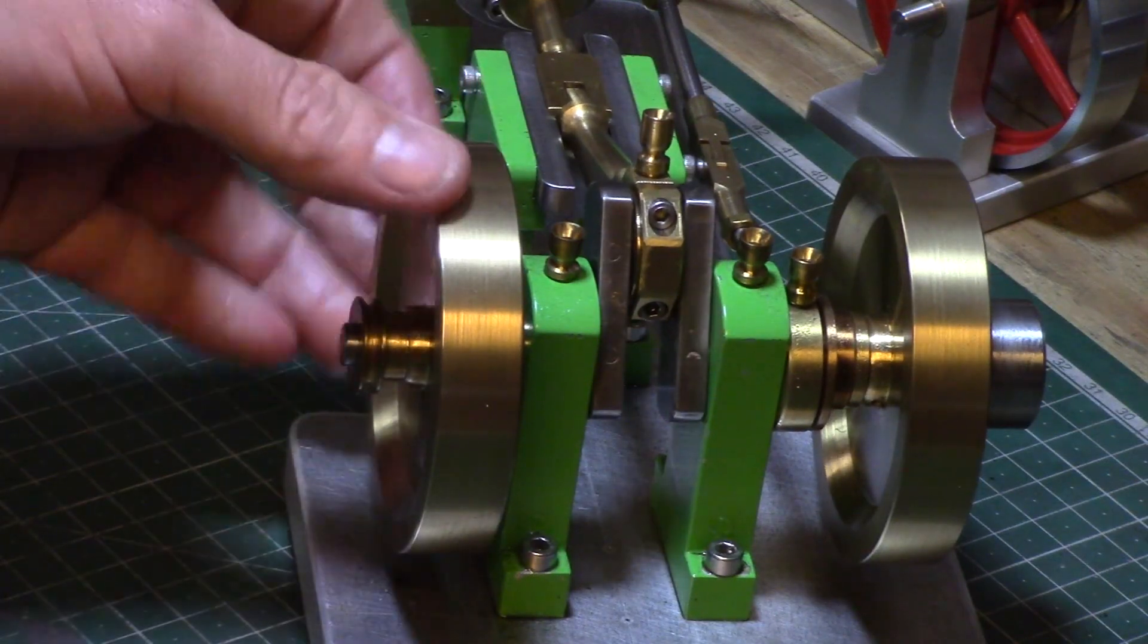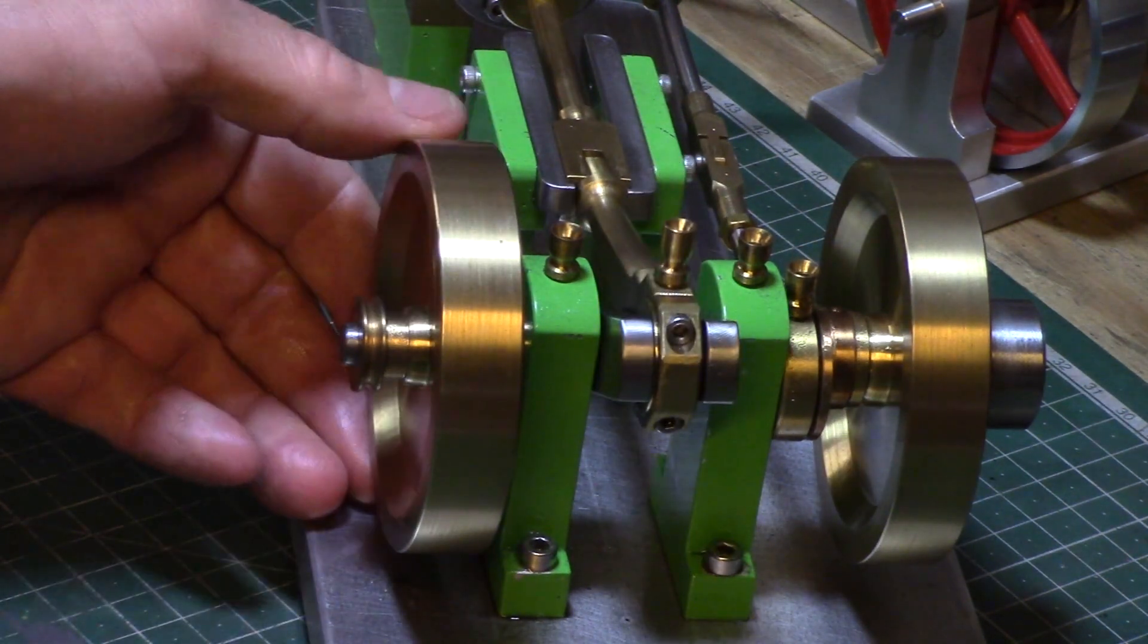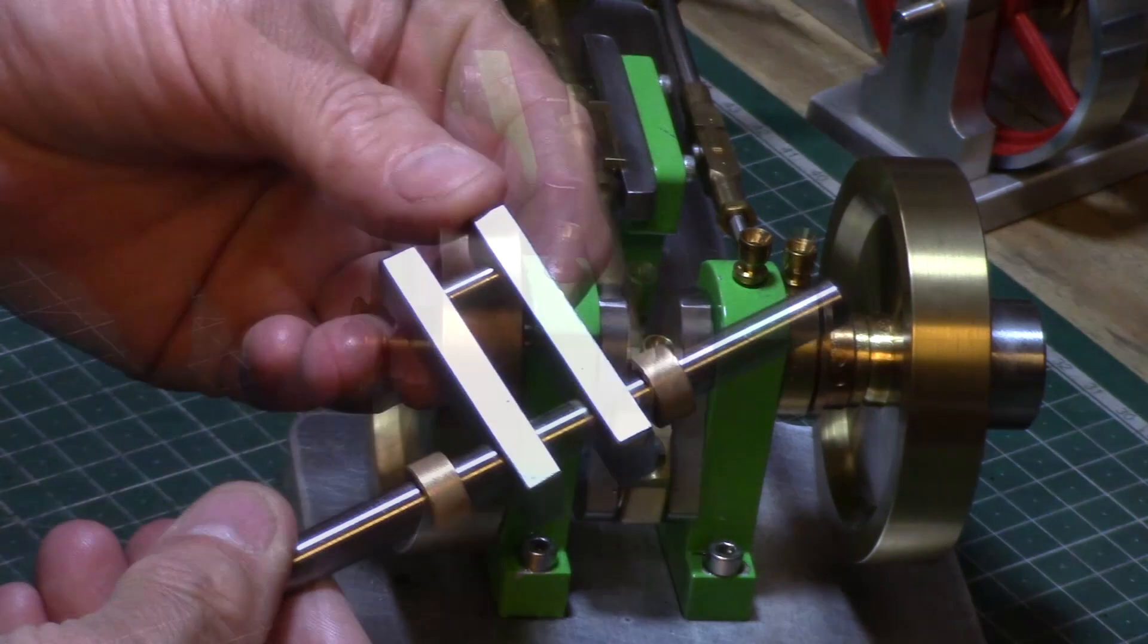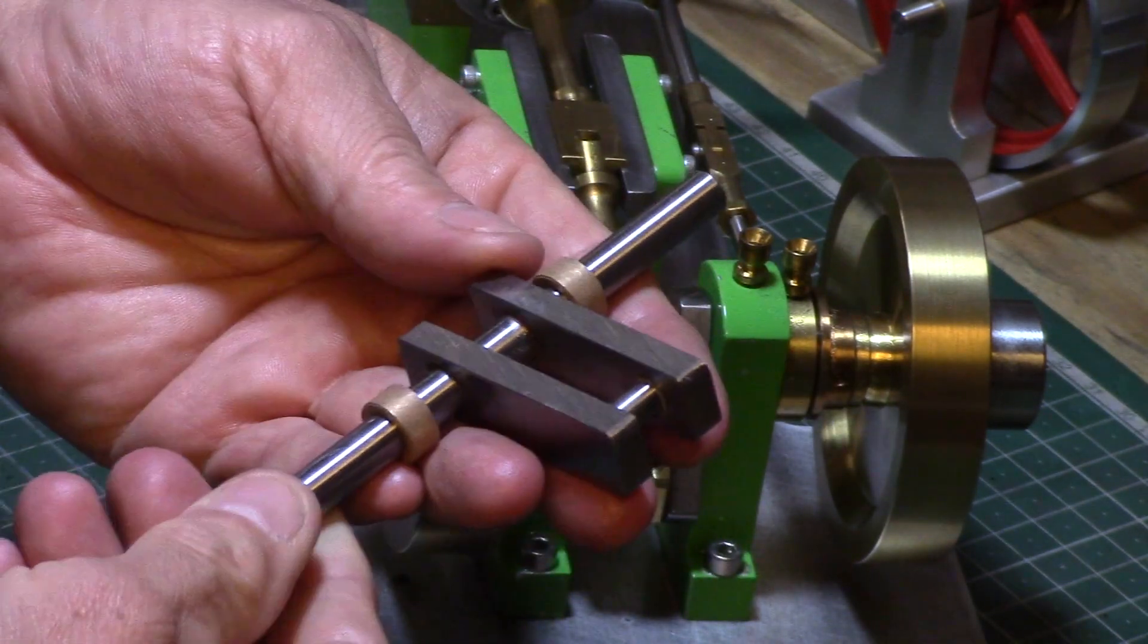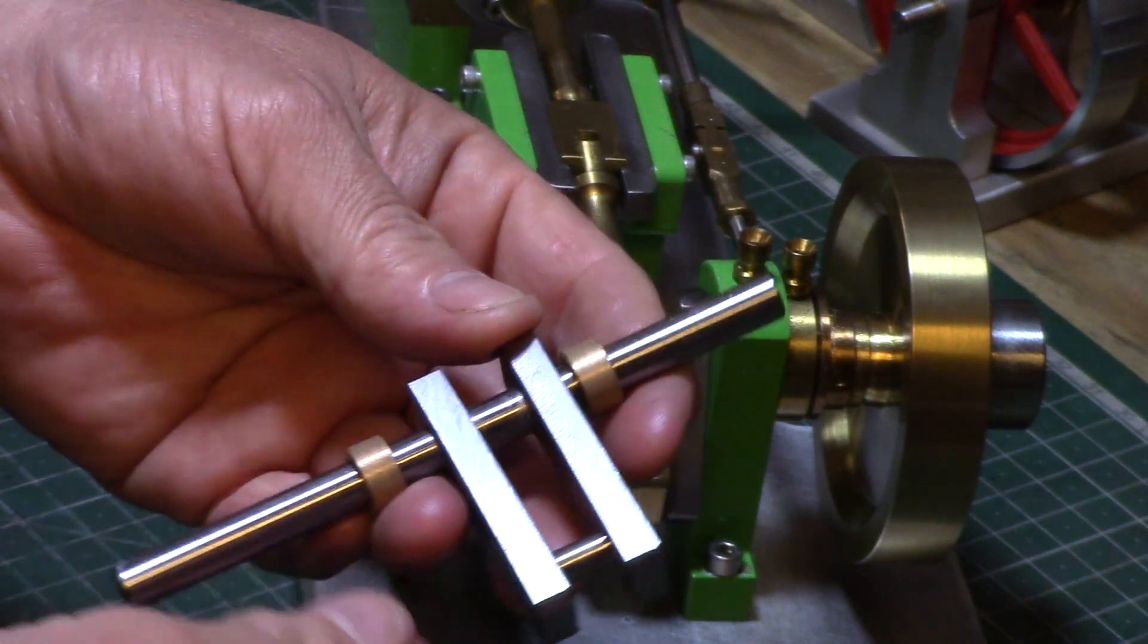The axle and crank was manufactured by using two steel plates which have been permanently fixed to the silver steel axle shaft by using tight fitting dowel pins pressed into the holes drilled through the plates and the shaft.